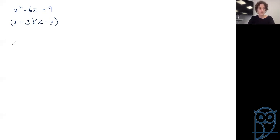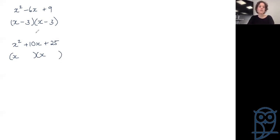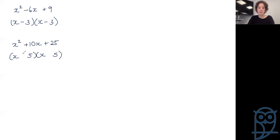Next: x squared plus 10x plus 25. Coefficient of x squared is 1, so x in each bracket. Factors of 25 which add to give 10 — that's 5 and 5. We've got plus c, so like signs. The sign of b is plus, so we must have plus in both brackets: (x + 5)(x + 5).